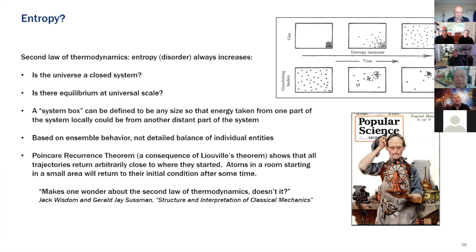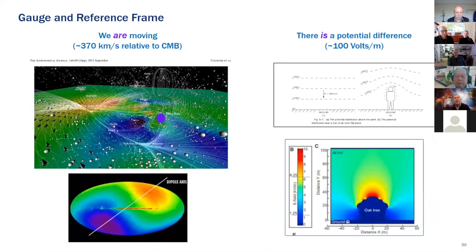And this is something I learned reading Jack wisdom's book about the Poincare recurrence theorem shows that all trajectories return arbitrarily close to where they started. And that's a mathematical consequence of course, you know, it may take for almost the lifetime of greater than the lifetime of the universe. But, you know, I like quoting Jack here, it makes one wonder about the second law of thermodynamics, doesn't it? And so we're going to hear more about that on Saturday, when we talk about the second law